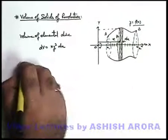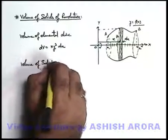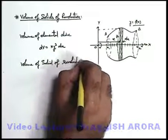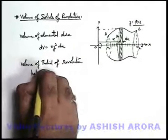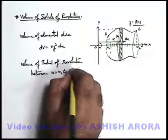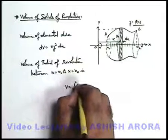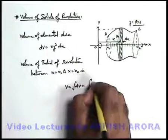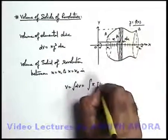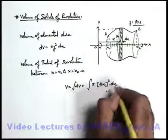Volume of solid of revolution between x equals x1 to x equals x2 can be written as integration of dV, which is π times f of x whole squared into dx.